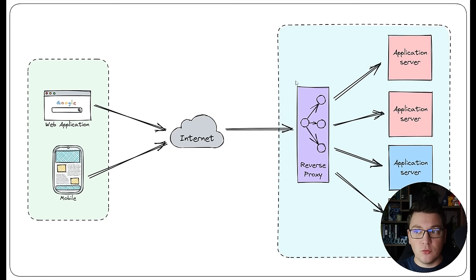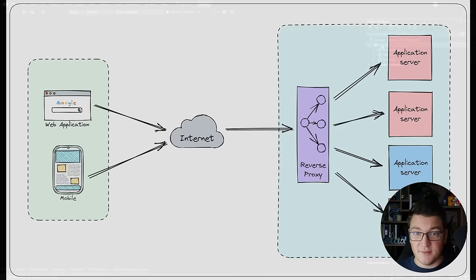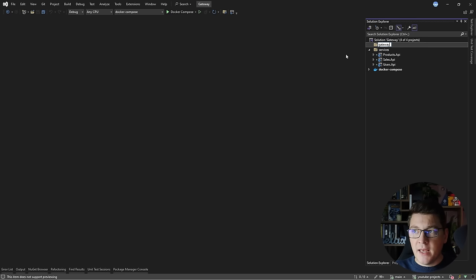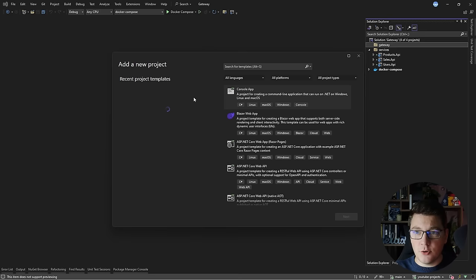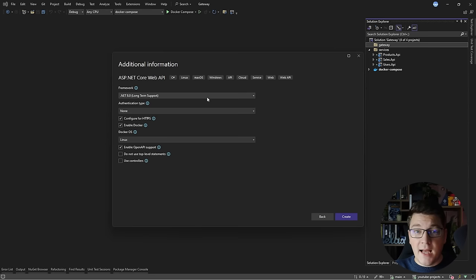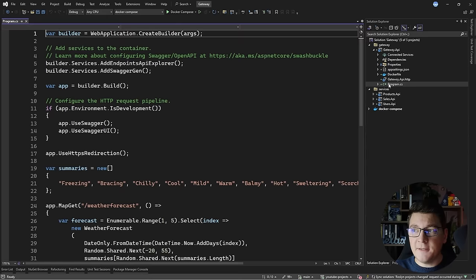The gateway is going to get a response back from the service and return that to the client. As far as the client is concerned, there's only one backend, which is the API gateway. This also makes the gateway a bottleneck in your system, but you can run the gateway in a highly available setup to mitigate for this. So now I'm going to show you how to implement an API gateway for your microservices in .NET. I'm going to add a new solution folder to hold my gateway.